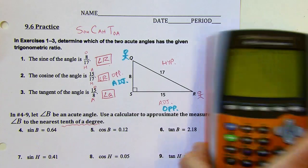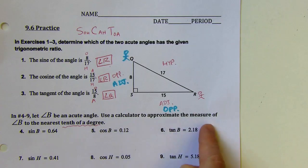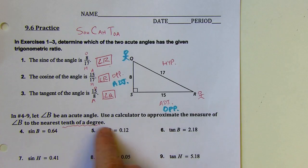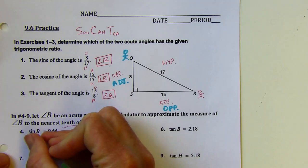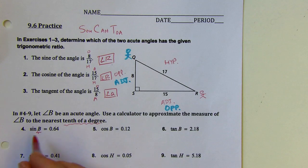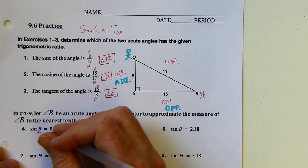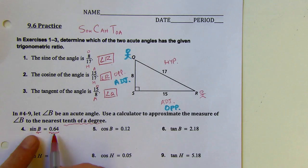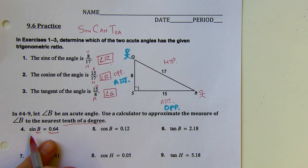This says angle B is an acute angle — use a calculator to approximate the measure of angle B to the nearest tenth of a degree. My unknown is the contents of the trig function. What I can do to isolate B is use the inverse sine, which will switch the position of those two things so that B is isolated.